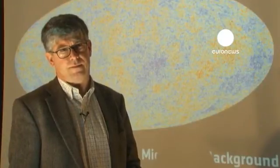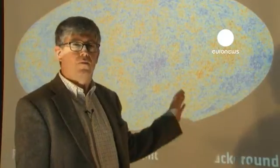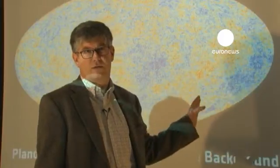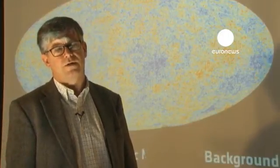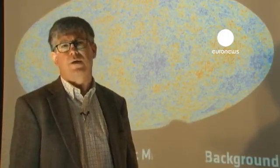So how is that created? This map was created by a satellite. So we have a satellite called Planck, which is out in space, quite far away from the Earth. And it is observing the sky. It is taking pictures of the sky.